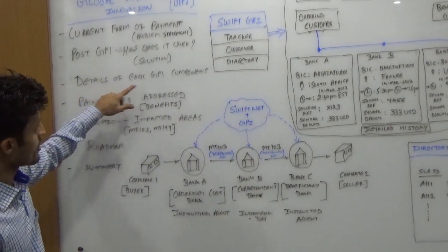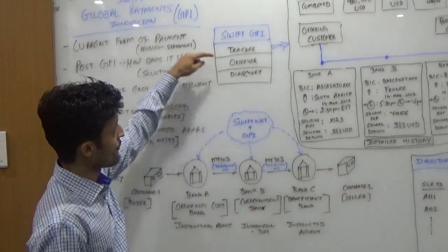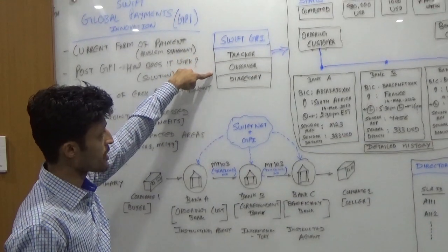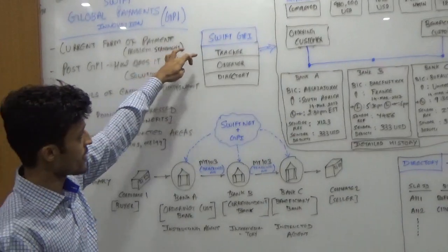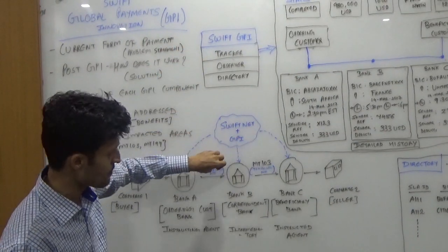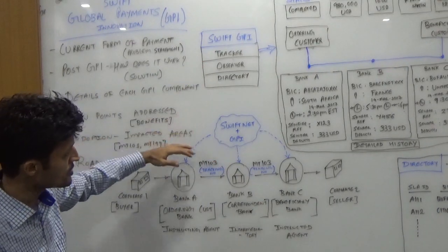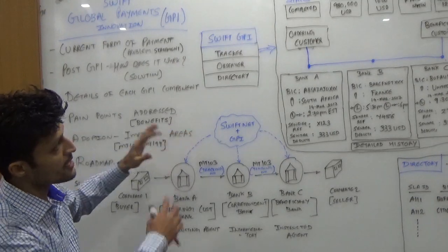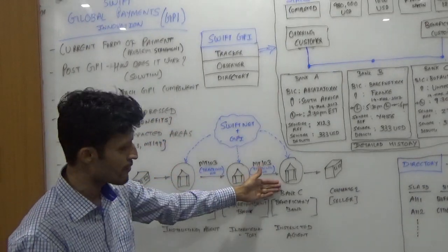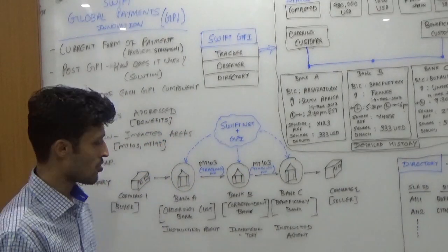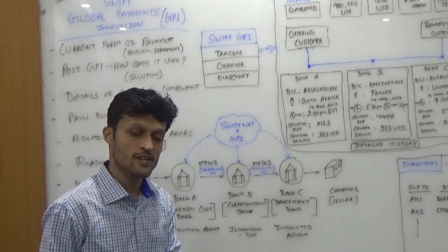Before we get into the details, Swift GPI has three different components. First is the Tracker component — to track payments using the unique reference number. Second is the Observer component, which is a business intelligence dashboard that shows what SLAs are defined for each bank, including your own bank, so community banks can also be part of this business intelligence dashboard. Third is the Directory component.